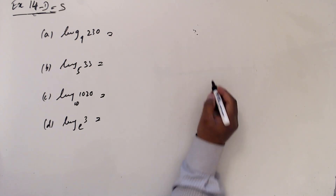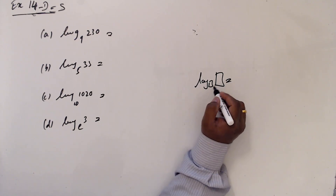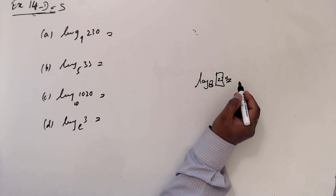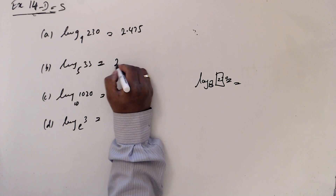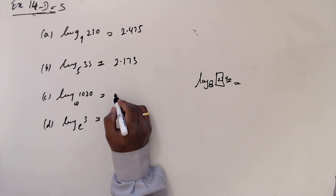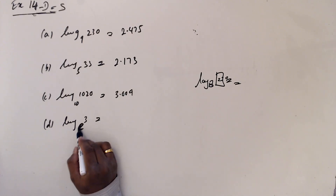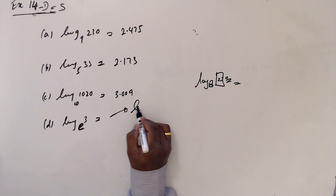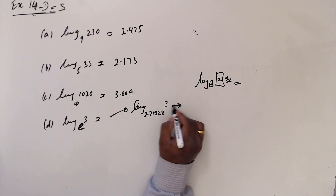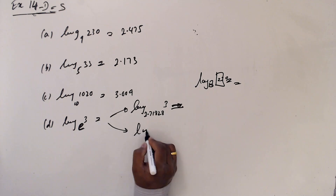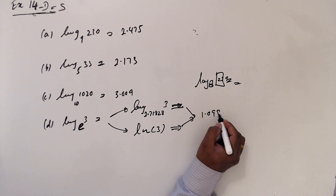This is the calculator exercise — from your calculator you can see the symbol. Type 9 here and this is 230, you will get your answer around 2.75. The same as this one: 2.173. And 0.009. Now for e, you have two options: you can write log of the e value 2.71828 to the power 3, or you can write ln 3 — you will get almost the same answer, approximately 1.099.